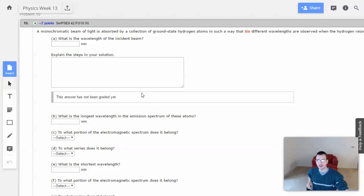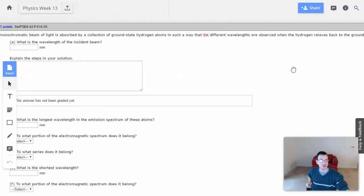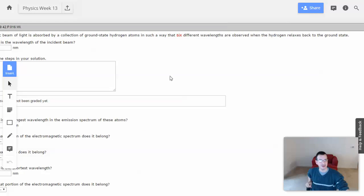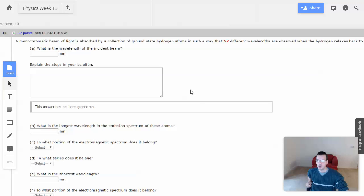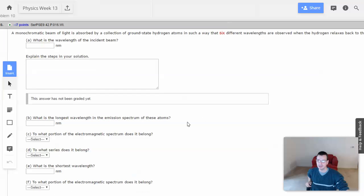Week 13, problem 10. A monochromatic beam of light is absorbed by a collection of ground state hydrogen atoms in such a way that six different wavelengths are absorbed when the hydrogen relaxes back to the ground state. What is the wavelength of the incident beam?